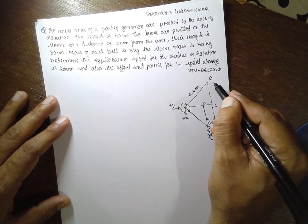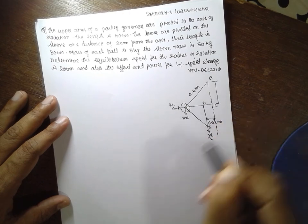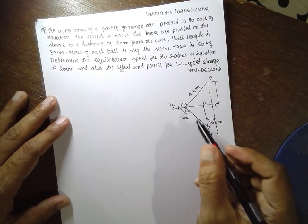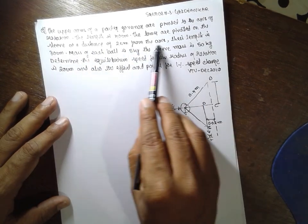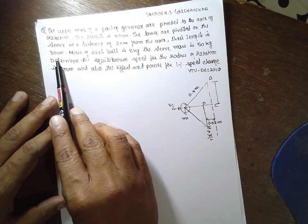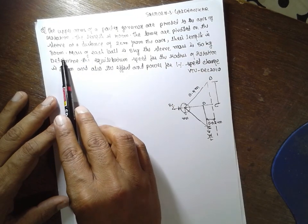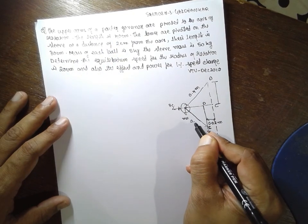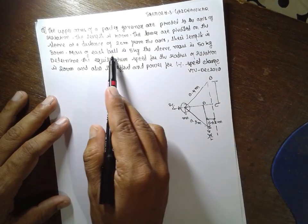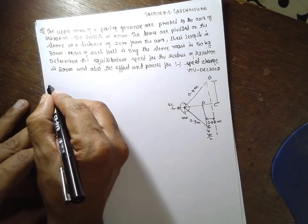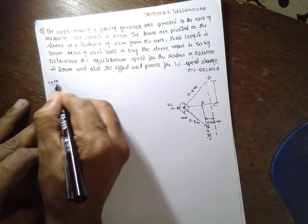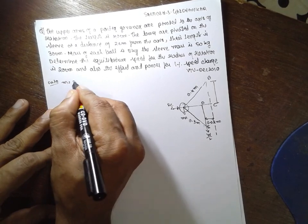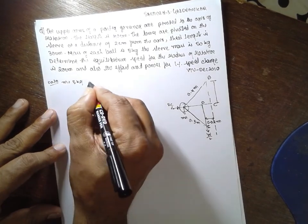This is the H. Whether it is H1 or HF, we have to find out. The end, their length is 30 cm. One is 40 and next is 30, 0.3 m. The mass of each ball is, mass is given, M is equal to small m is equal to 5 kg. And sleeve mass is 50 kg.